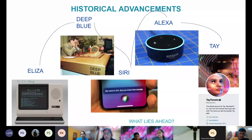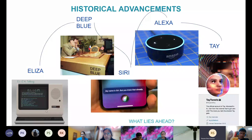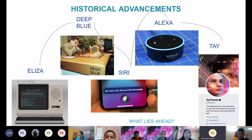After Deep Blue came Siri. Siri is a voice assistant with speech recognition — it can recognize your voice, set your alarms, organize your routines, and perform internet searches. It has a natural language user interface and uses a lot of natural language processing. Siri was developed around 2010. After Siri came Alexa, which can do much more.